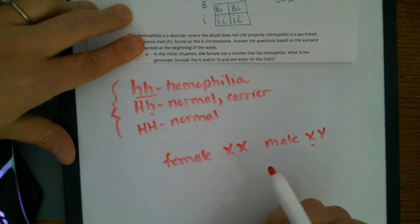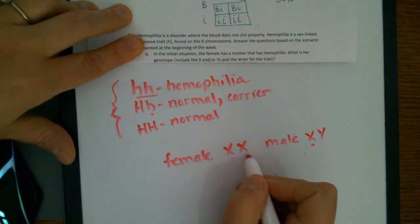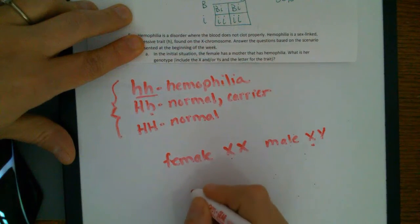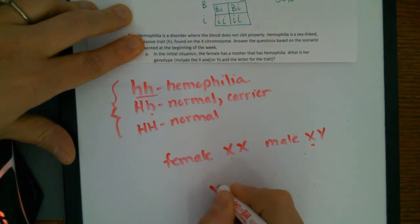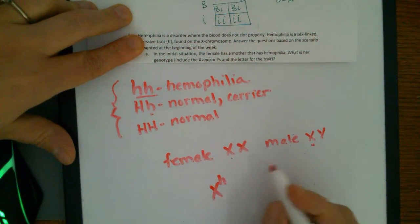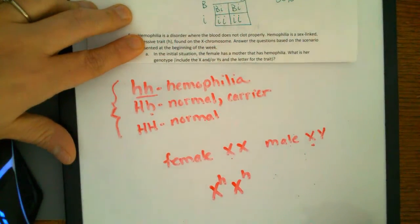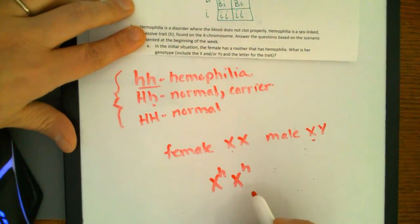Well, we know that in order to have hemophilia, you have to have two little H's, and we know that if you're a female, you're XX. So the mom would be X little H because you have to have the X, and it carries one of the alleles for hemophilia, and X little H. That's what the mother would be.